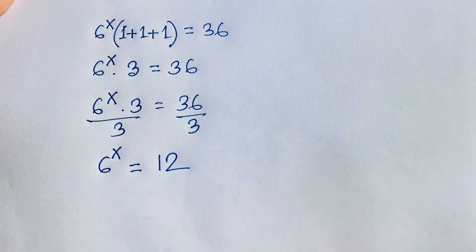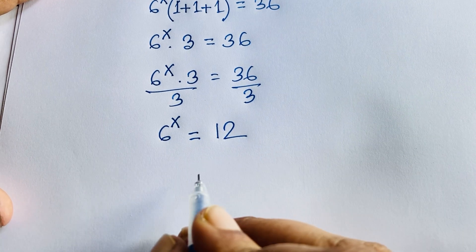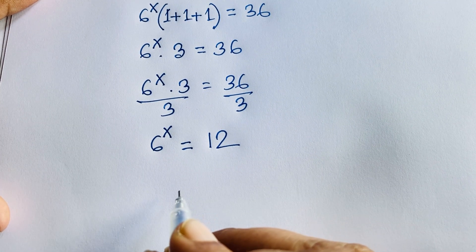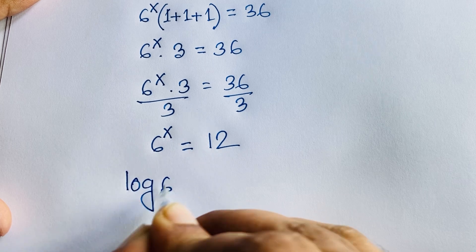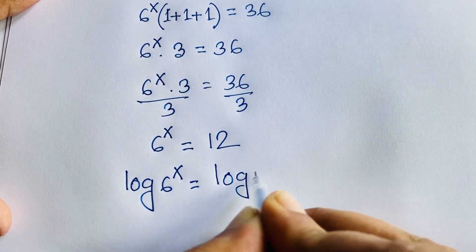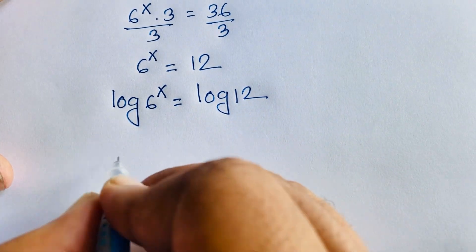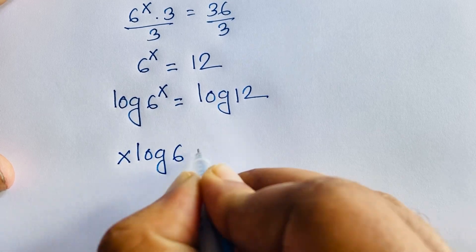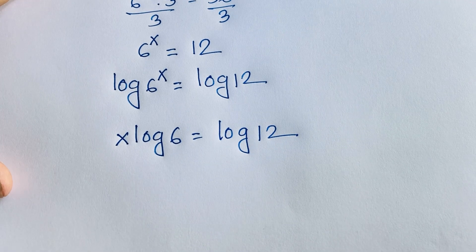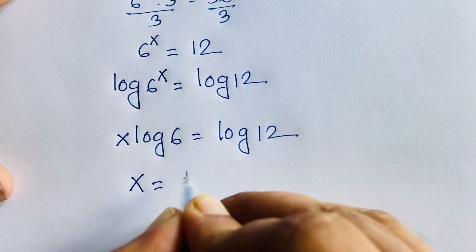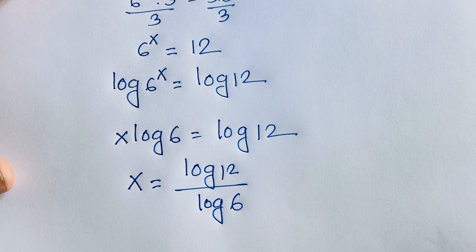Now 6 to the power x is equal to 12. If I want to find out the value of x in this equation, I use natural log on both sides: log(6^x) is equal to log 12. Now this exponent moves to the front, so it will be x times log 6 is equal to log 12. Now I divide both sides by log 6, so I find out x is equal to log 12 over log 6.